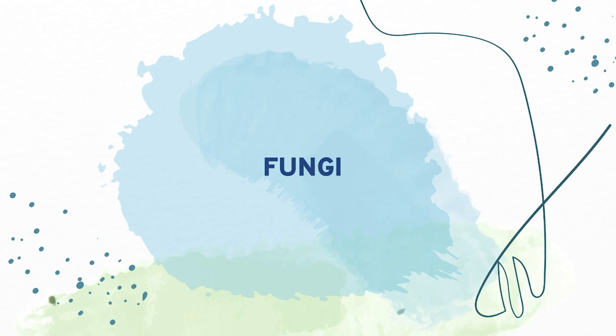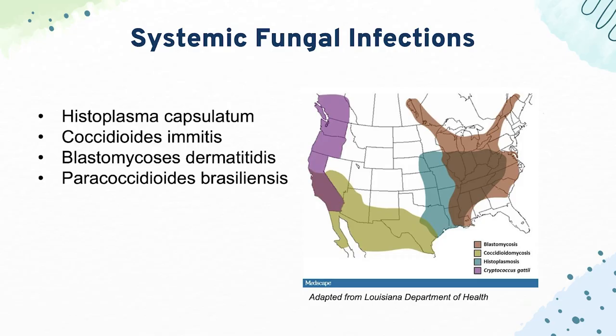Next we start with our fungi, which are becoming increasingly high yield on the exam. Starting off with Histoplasma capsulatum — it's endemic to the Ohio River Valley, usually caused by bat droppings, and manifests as hepatosplenomegaly and pancytopenia.